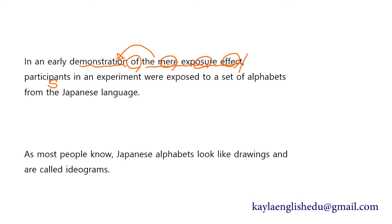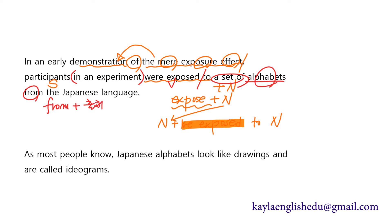참여자들은, 동사는 여기에요. be exposed to 명사, 명사에 노출되다. expose라고 하는 동사는 expose 플러스 명사, 명사를 노출시키다 그랬는데 이것을 수동태로 앞으로 날아가고 be exposed to 그리고 나서 명사 이렇게 나와 있는 거죠. 하나의 실험에서 참여자들은 노출되었다. A set of alphabet, 한 세트의 알파벳에 노출되어 있는데 전치사 from 다음에 Japanese language.